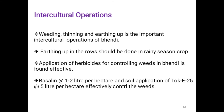Weeding, thinning and earthing up are important intercultural operations in okra. Earthing up in the rows should be done during the rainy season crop. For weed control, herbicides such as Basalin at 1–2 litres per hectare and TOK-E25 at 5 litres per hectare soil application are effective.